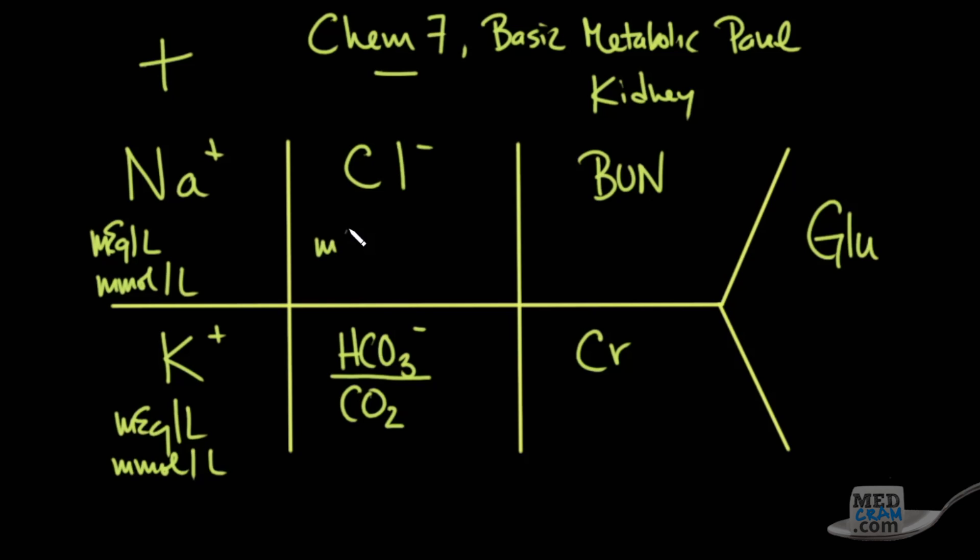Same with this middle column. This is also milliequivalents per liter, or milliemoles per liter. The BUN and the creatinine, however, are expressed in milligrams per deciliter, and glucose also in milligrams per deciliter.